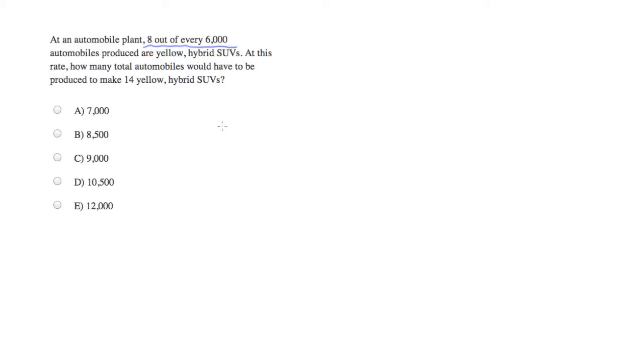The proportion is going to be fairly simple. It's going to be the number of yellow hybrid SUVs over the total number of cars, and that rate is held constant. We're told that in the beginning that rate is a constant number.